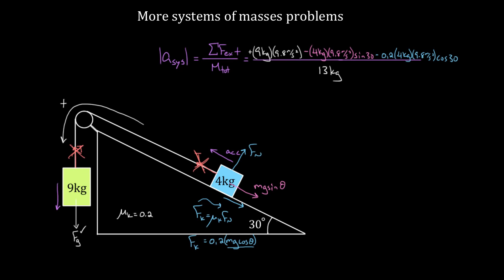If we just solve this now and calculate, we're going to get 4.75 meters per second squared as the acceleration of this system. So the four kilogram mass will accelerate up the incline with an acceleration of 4.75 meters per second squared, and the nine kilogram mass will accelerate downward with a magnitude of 4.75 meters per second squared.